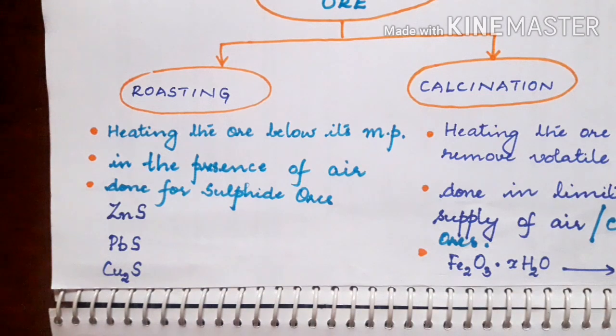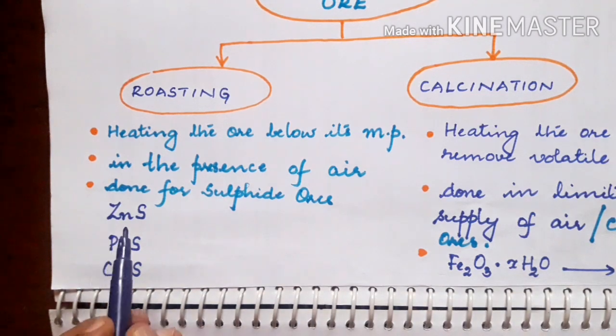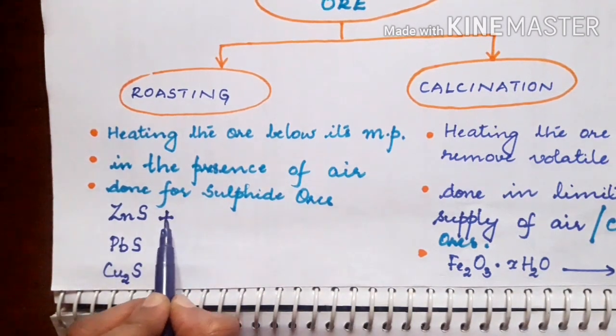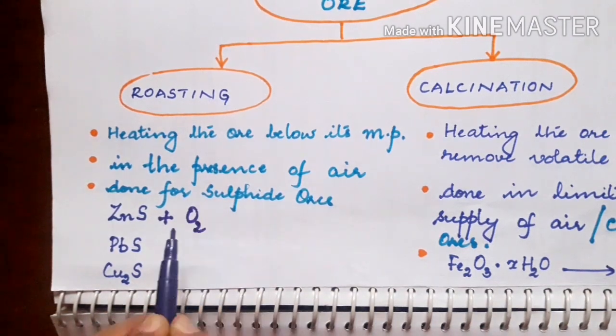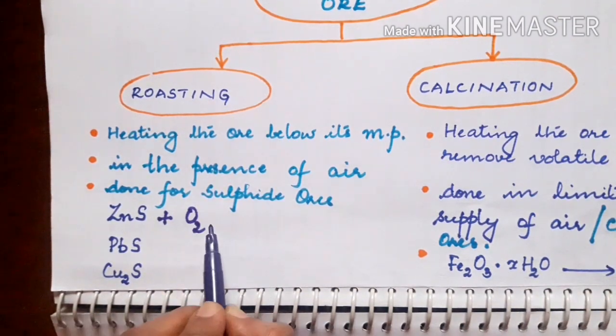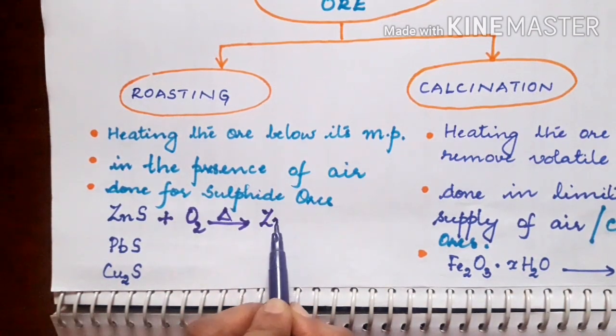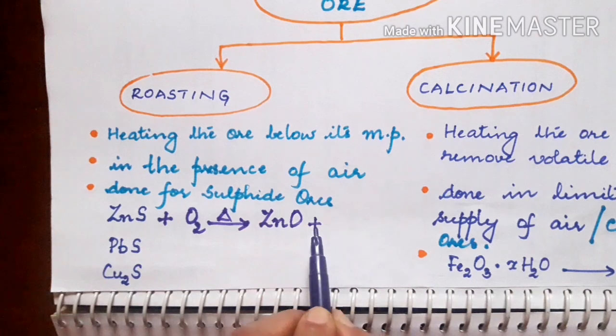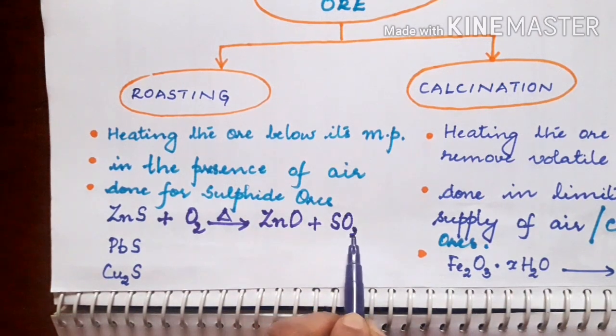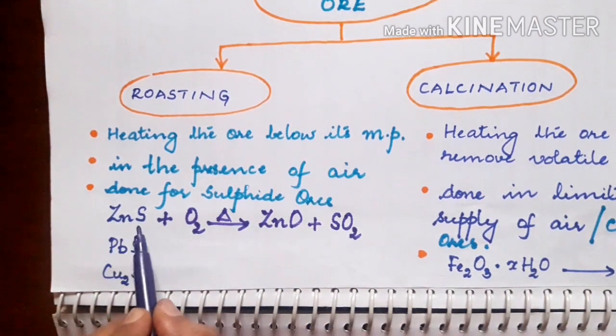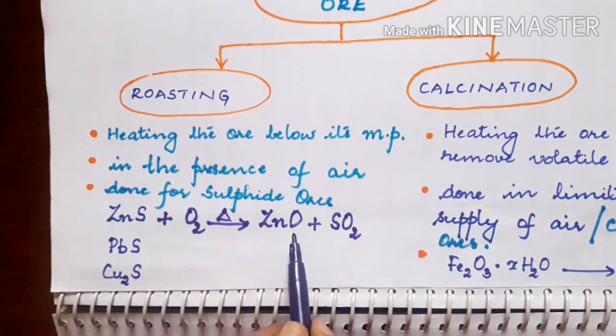I have taken the example of zinc sulfide. Zinc sulfide on reaction with air, on burning in air, reacts with oxygen and will be converted to zinc oxide, liberating sulfur dioxide. So you have converted the sulfide ore into its oxide.